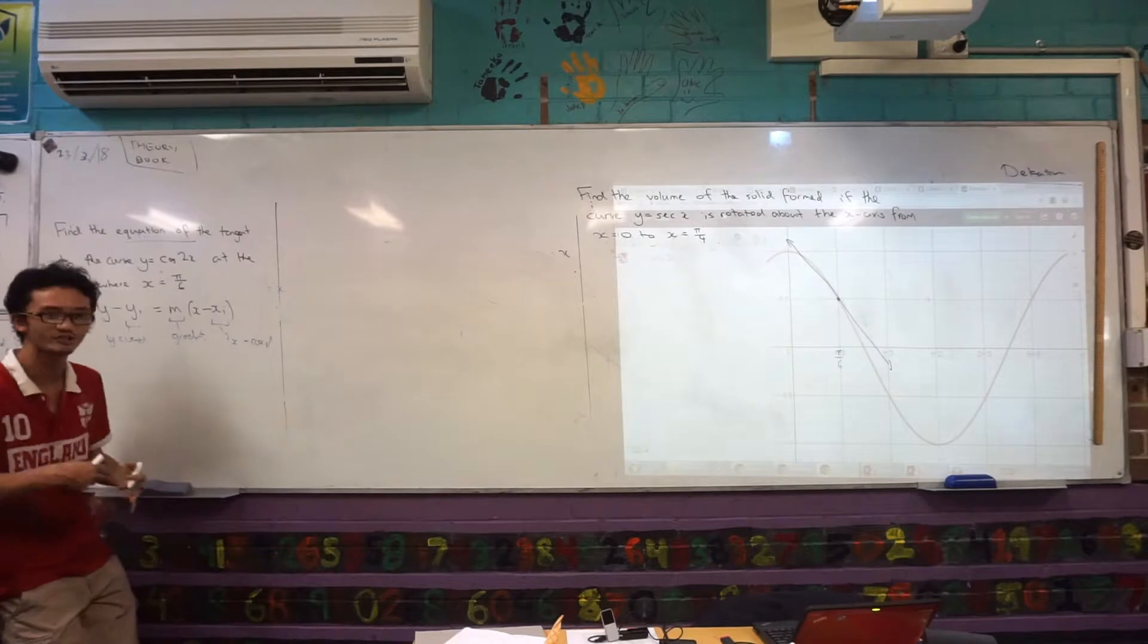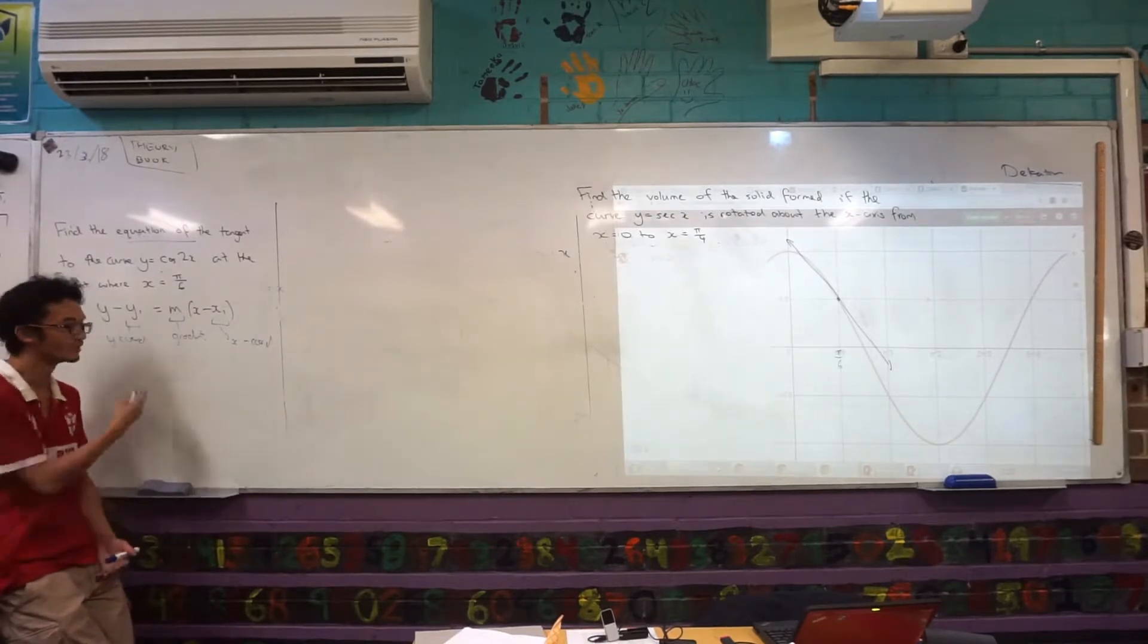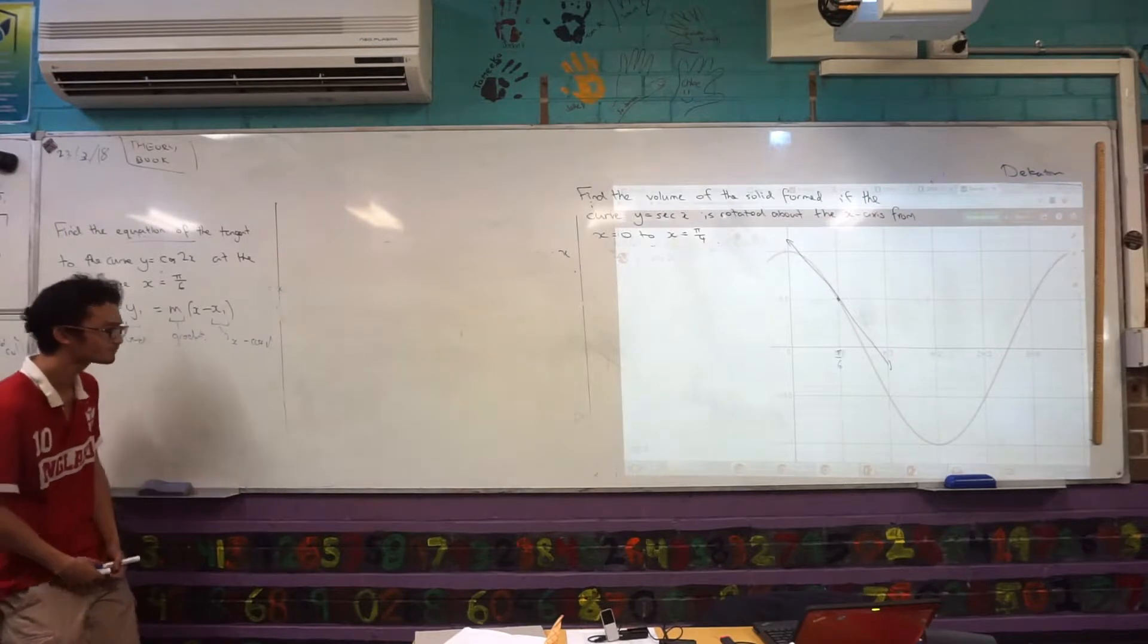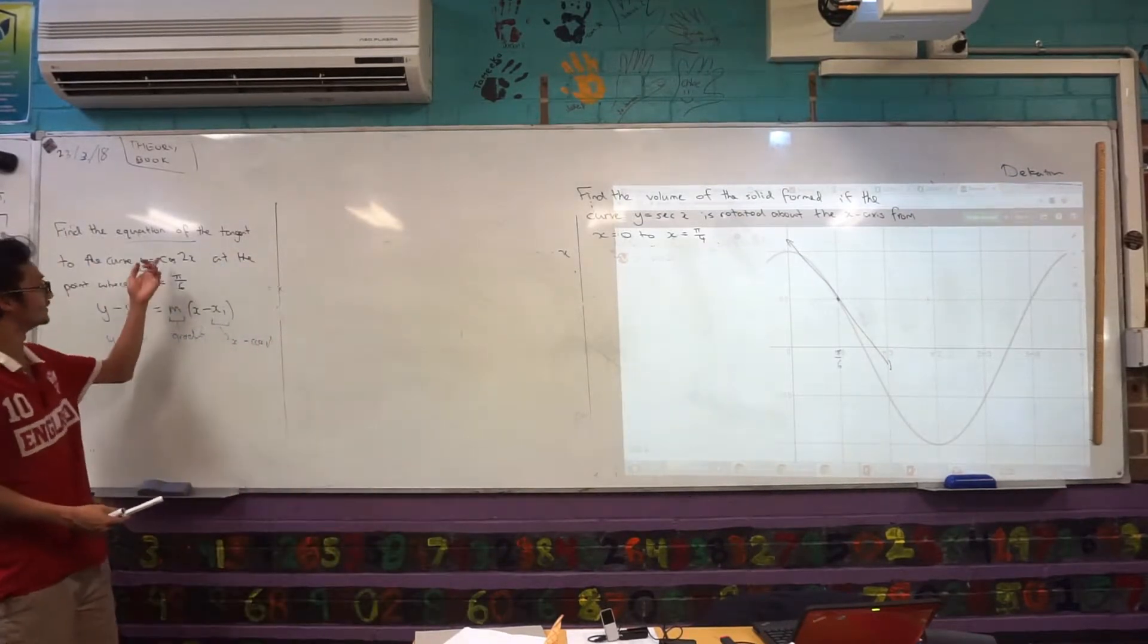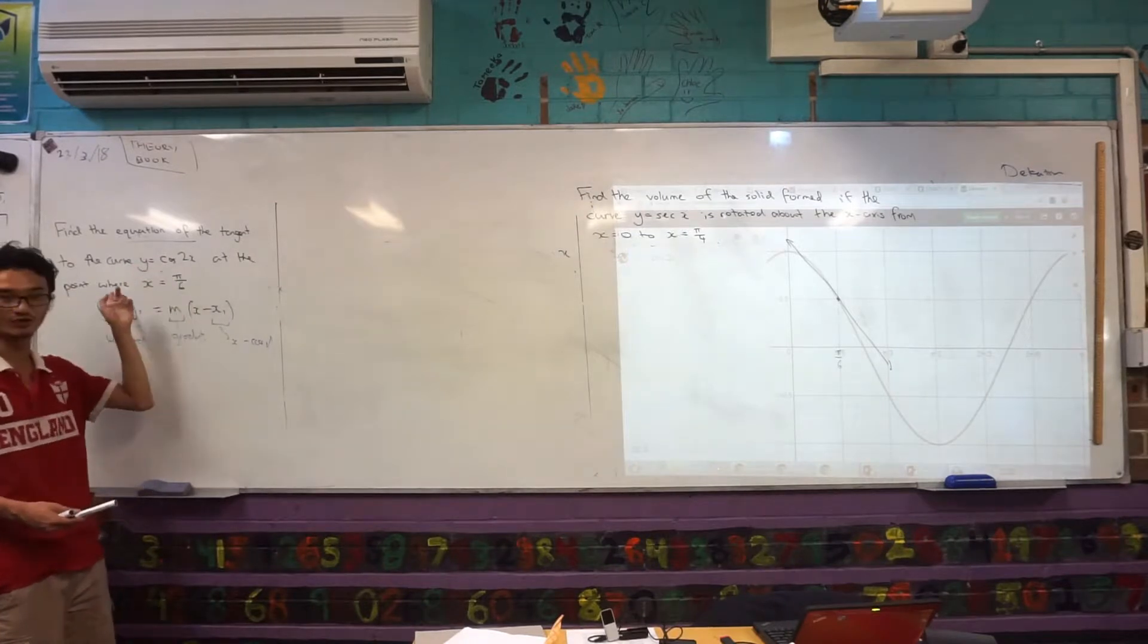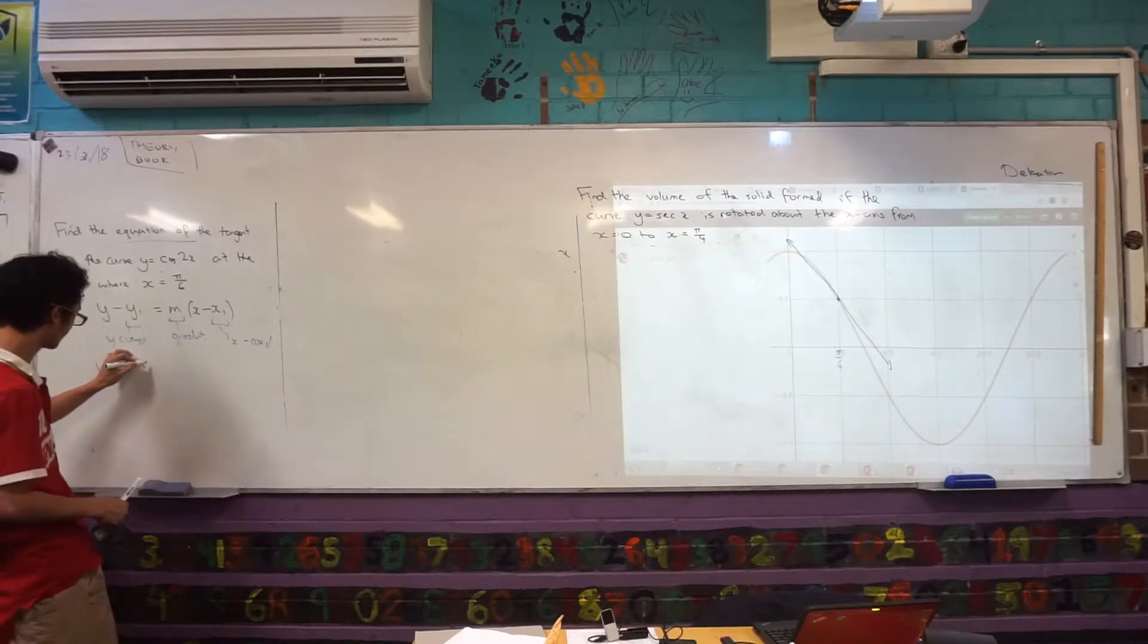So just before you dive into the question, before you start doing any operations, just think about what do I actually need to do, what do I need to find, what do these things mean again. Okay, now obviously with this one, it's slightly different. I need to find the gradient of this curve, and I know that's going to be involving the first derivative. So I say, well, y equals cos(2x), what would y dash be?